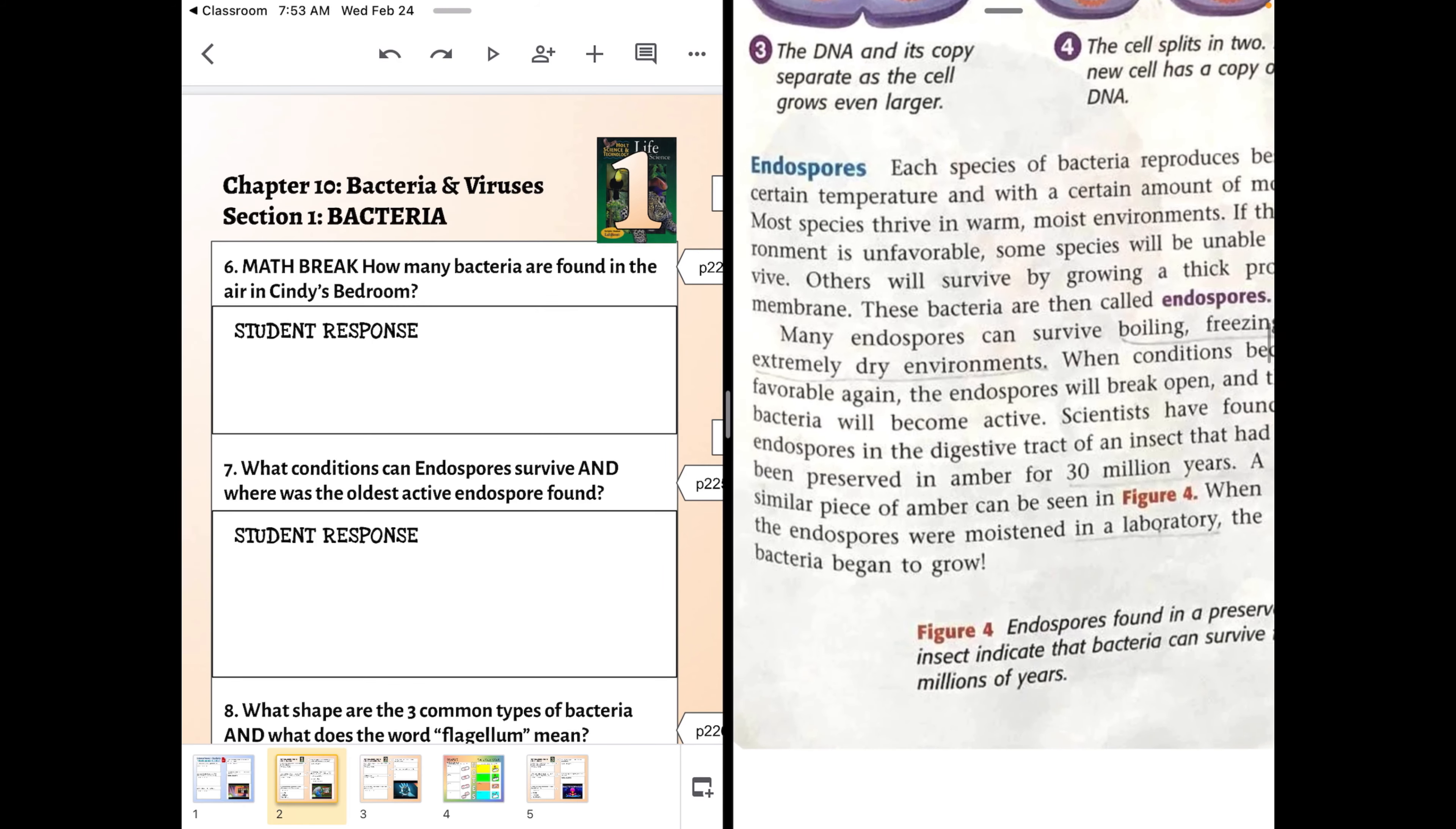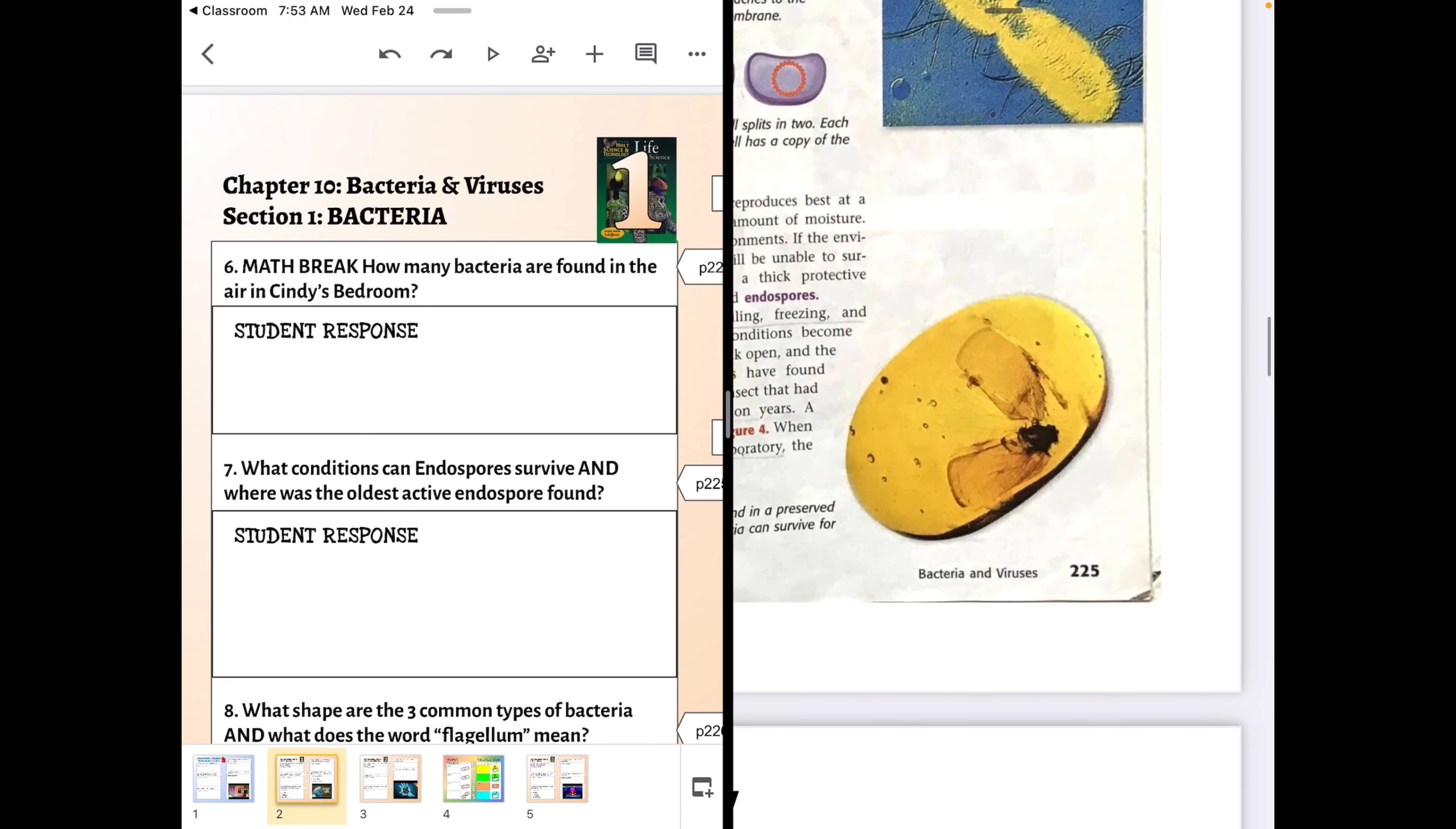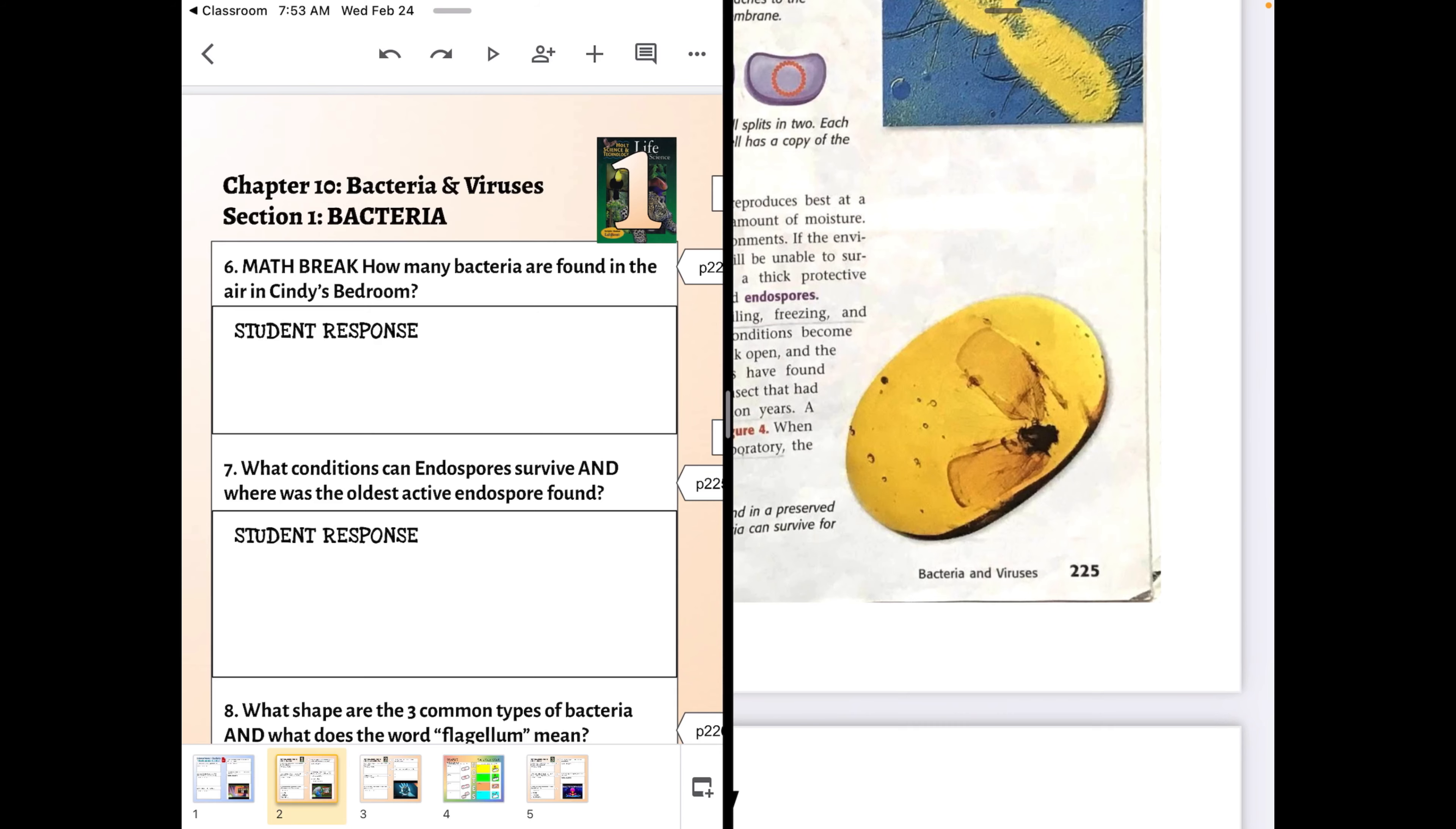The next question is about endospores. Most bacteria can't do this, but a few bacteria, if given the right conditions, will form endospores that can survive pretty nasty things. In fact, they've sent them out into space and they're fine. The oldest active endospore, an endospore that we woke up, because making an endospore is basically putting your life on pause, is in the picture.